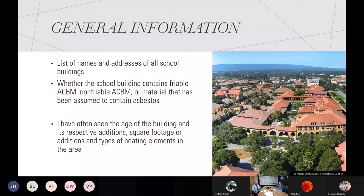The general information section will have a list of the name and address of all school buildings, whether the building contains friable asbestos containing building material, non-friable, or material assumed to contain asbestos — many buildings will contain all three. Many plans also list the age of the building or additions, the square footage of each section, and any type of heating element in that area. The heating element can be important: it tells us whether asbestos might be involved in that element, and helps determine how easily material could be spread if something were to break or delaminate — forced air is going to move things throughout the room much easier than, say, electric heat.